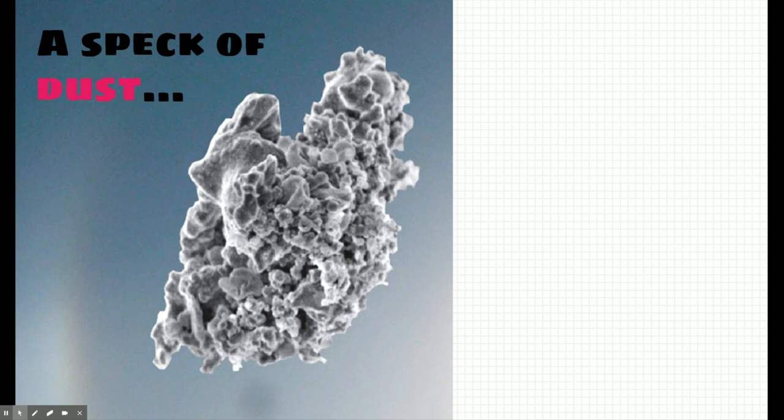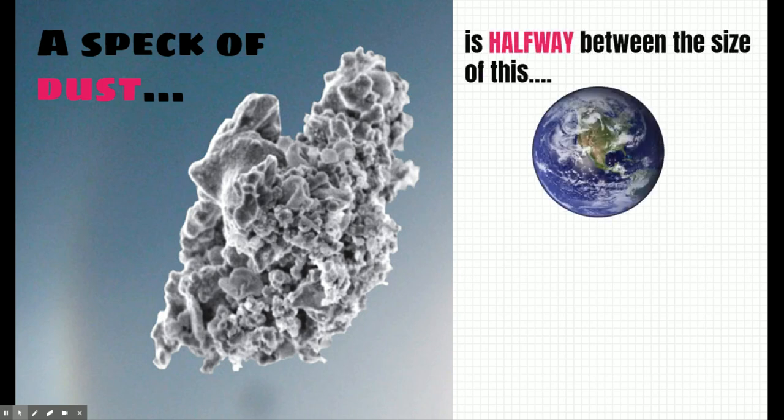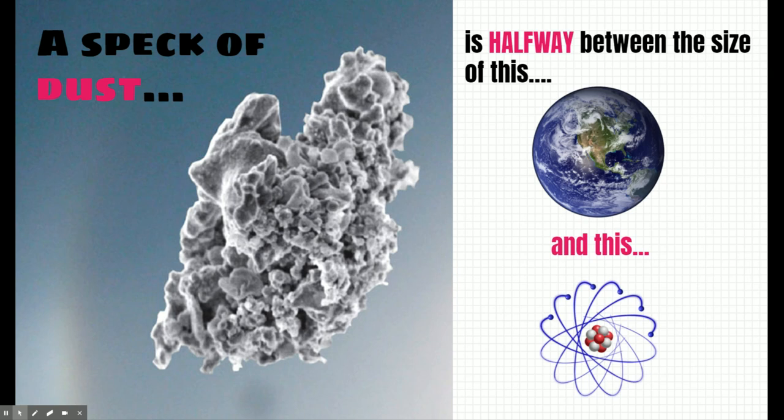How big is an atom? I want to give you an analogy. Take your finger, swipe it on the table, and see if you can pick up a speck of dust — it might be really hard to see. Specks of dust are really small, but not as small as atoms. A speck of dust by size is halfway between the size of the earth and an atom. Atoms are super small — in fact, a speck of dust is made of thousands, millions of atoms.